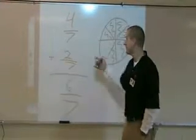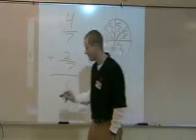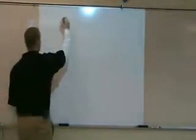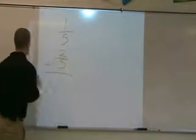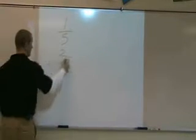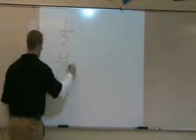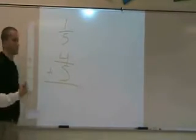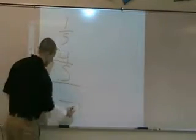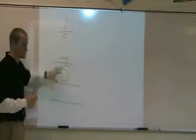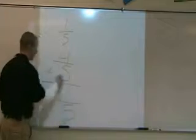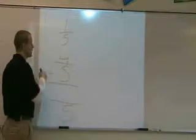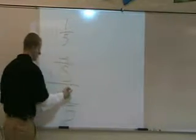When you add fractions, you need to make sure you have a common denominator. Let's try another example: one-fifth plus four-fifths. Remember, my denominator represents how many slices the tray can hold — and it's got to stay the same. My common denominator is five. So now we add our numerators: one plus four equals five. So five-fifths — when the numerator and denominator are the same, that makes it a whole number, which equals one. Five divided by five equals one.